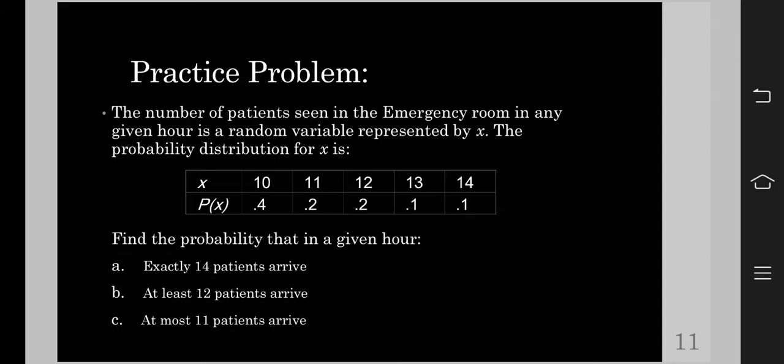To begin with, we have here the problem. The number of patients seen in the emergency room in any given hour is a random variable represented by X. The probability distribution for X is given.